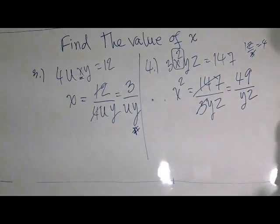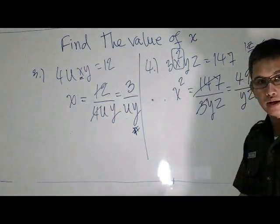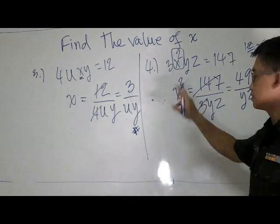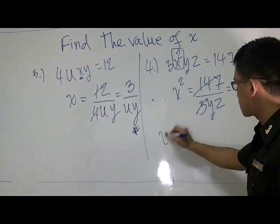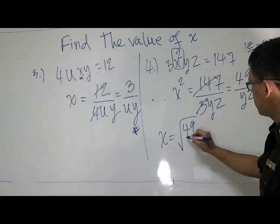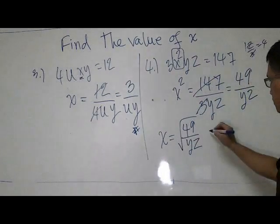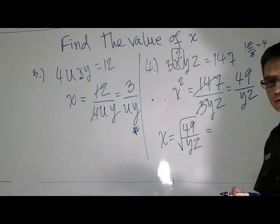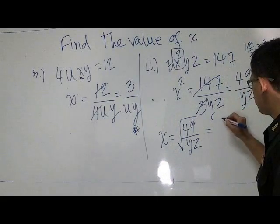Now, we don't forget — we have x squared. How do you eliminate it? You can take x squared. The square root of 49 is 7.